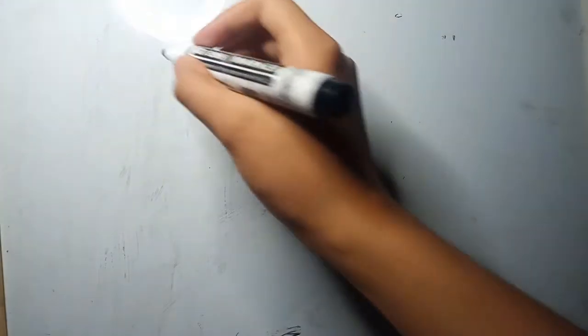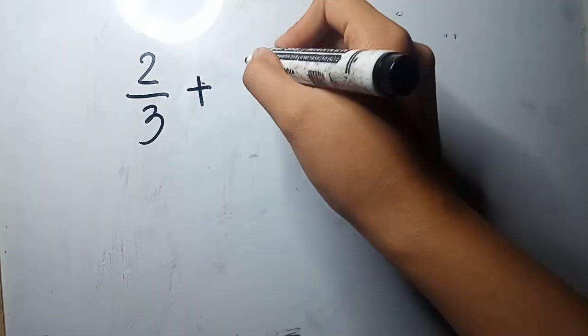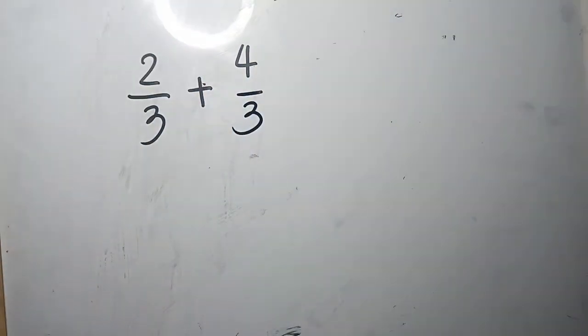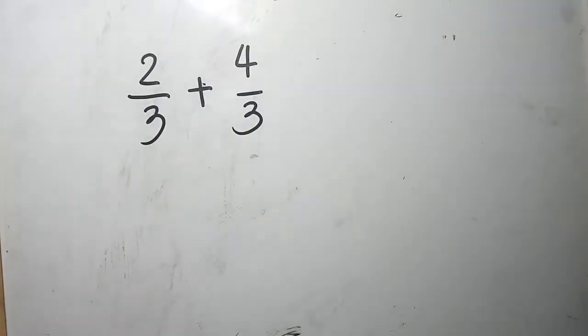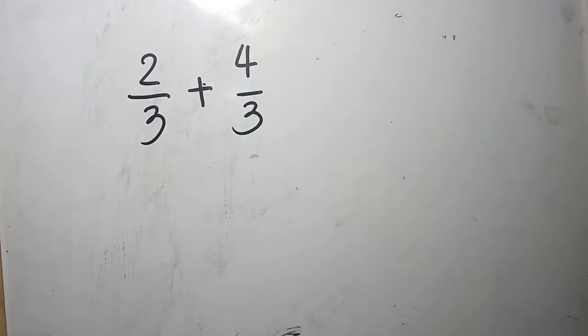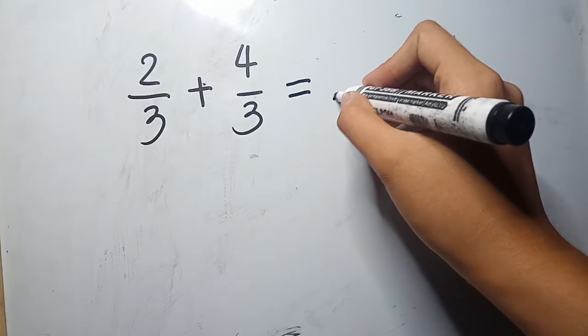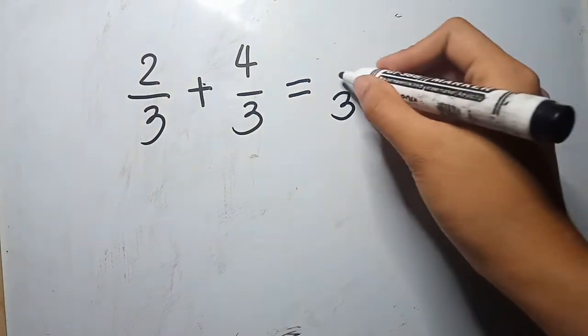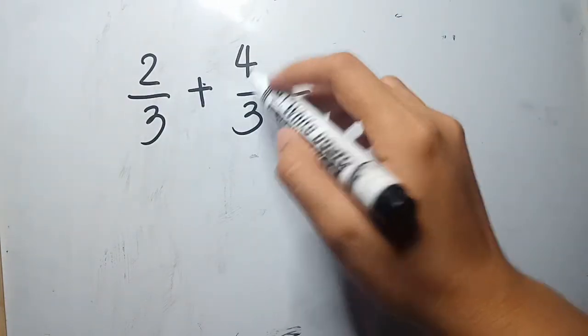Adding and subtracting fractions have the same rule. We'll start with adding and subtracting similar fractions. Similar fractions means the two fractions have the same denominator. For example, 2 thirds plus 4 thirds. The rule when adding or subtracting similar fractions is we will just copy the common denominator, which is 3, and then add the numerators. 2 plus 4 gives us 6.